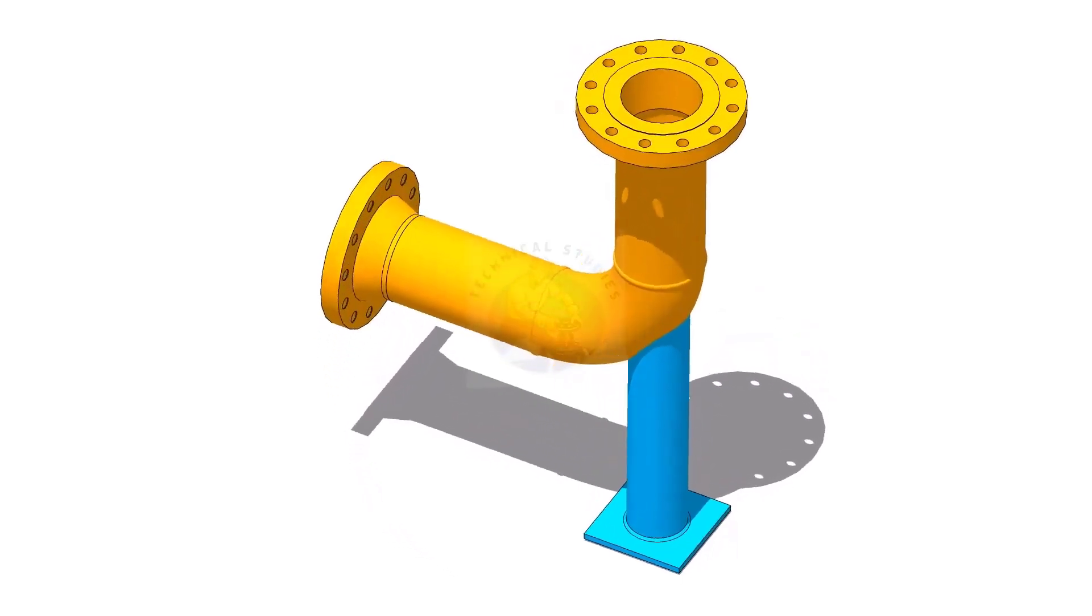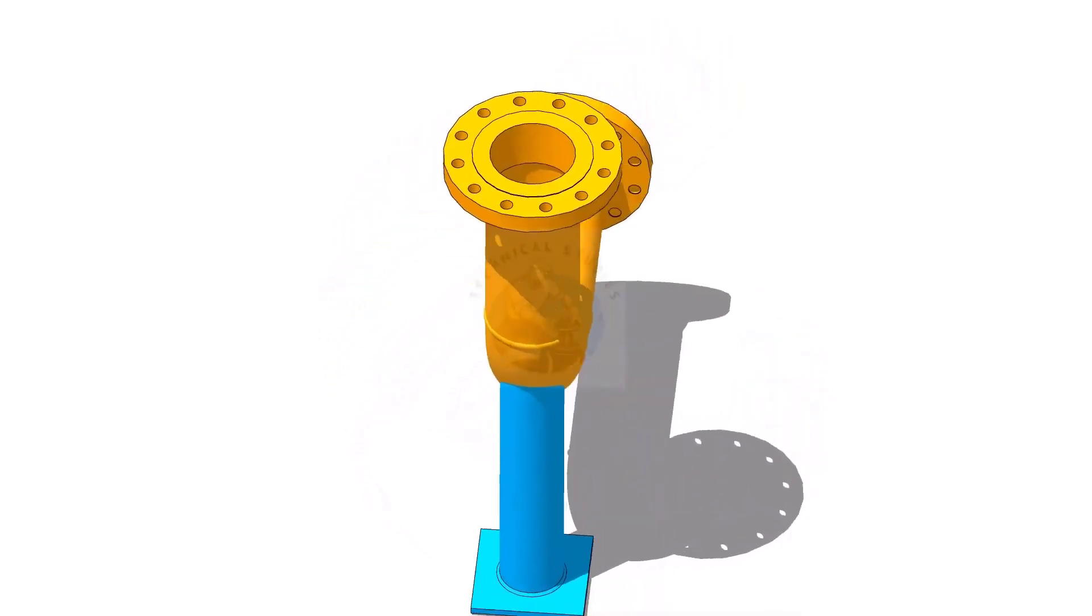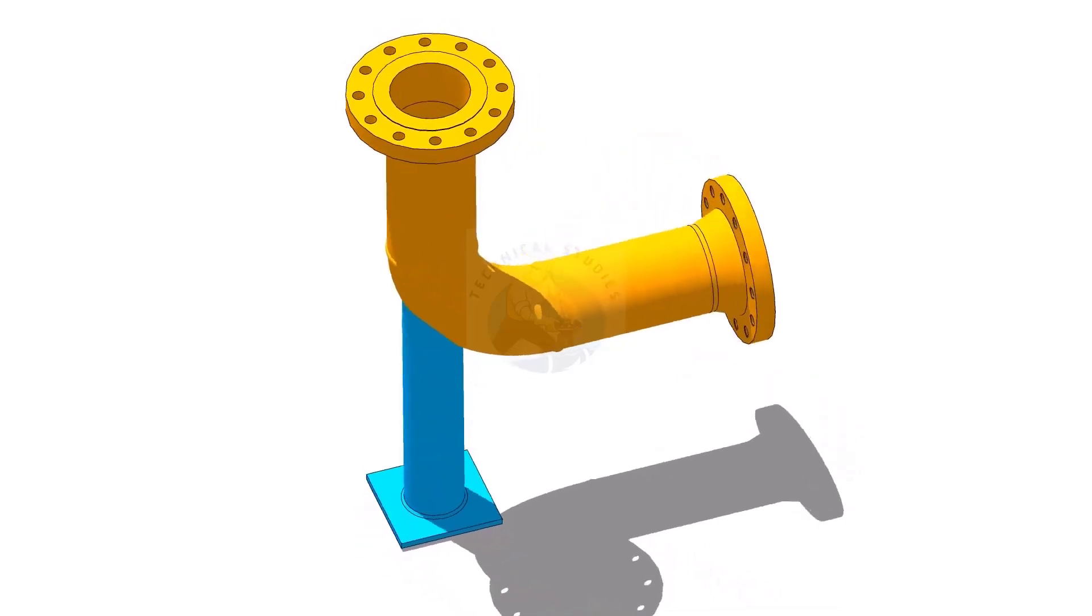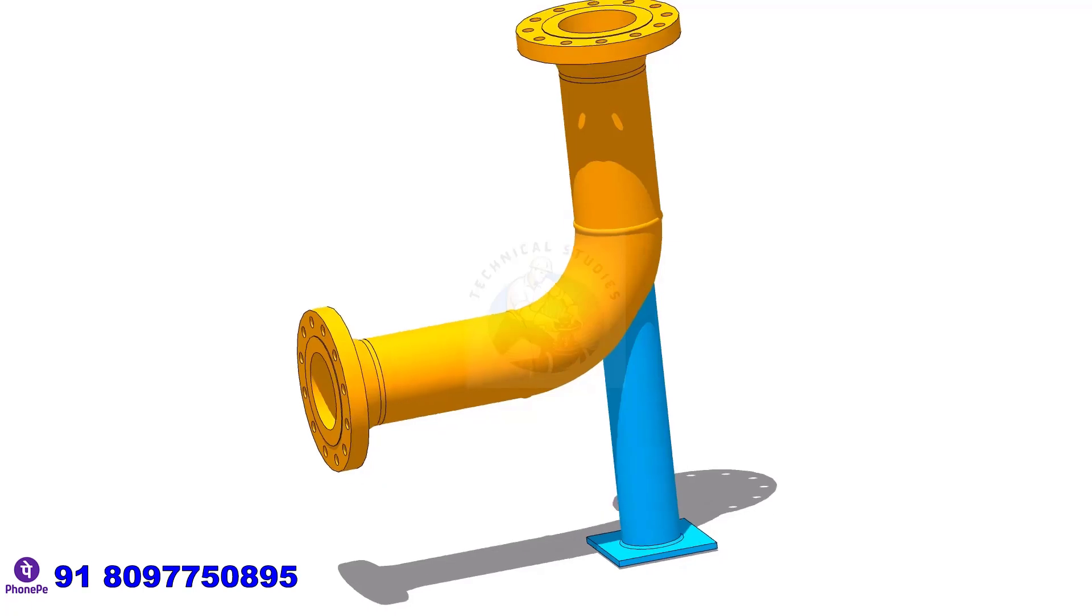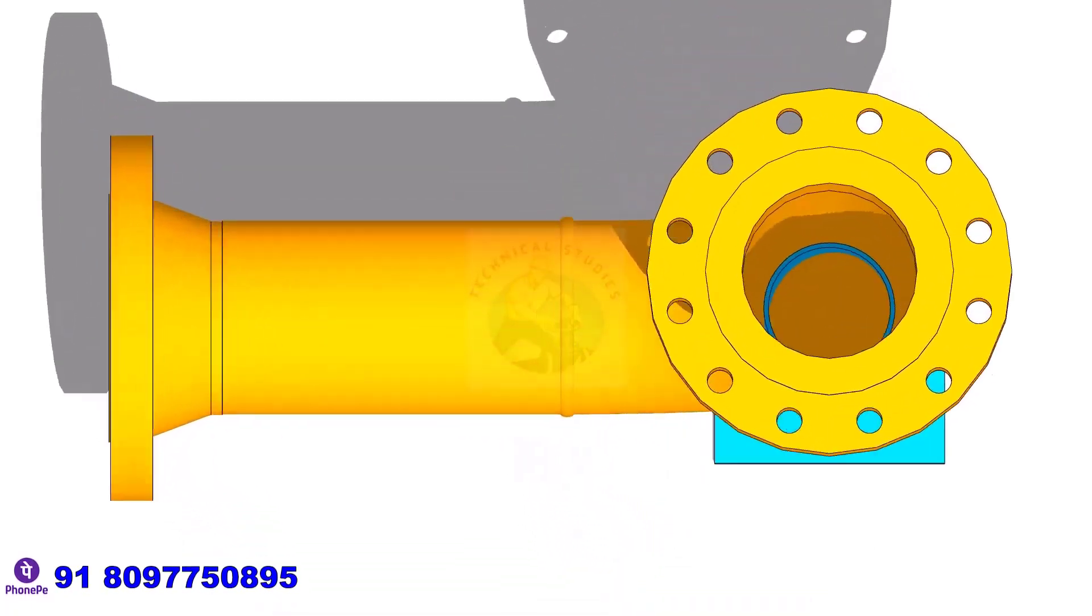A trunnion pipe support is a type of pipe support used to reinforce and stabilize piping systems. In this video, I will show you how to lay out a trunnion support. Please subscribe, like and comment.